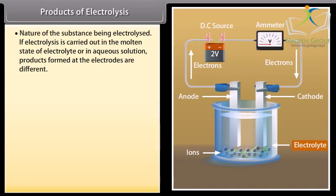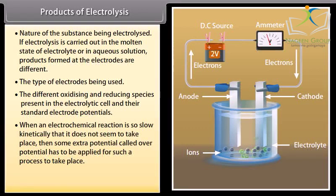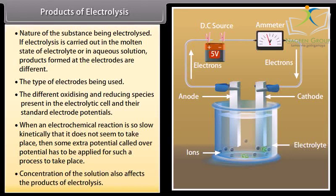Products of electrolysis depend mainly upon the following factors: Nature of the substance being electrolyzed. If electrolysis is carried out in the molten state of electrolyte or in aqueous solution, products formed at the electrodes are different. The type of electrodes being used. If the electrode used is inert, it does not take part in the reaction. Or if the electrode is reactive, it takes part in the electrode reaction. Then the products of electrolysis would be different. The different oxidizing and reducing species present in the electrolytic cell and their standard electrode potentials. When an electrochemical reaction is so slow kinetically that it does not seem to take place, then some extra potential called over potential has to be applied for such a process to take place. Concentration of the solution also affects the products of electrolysis.